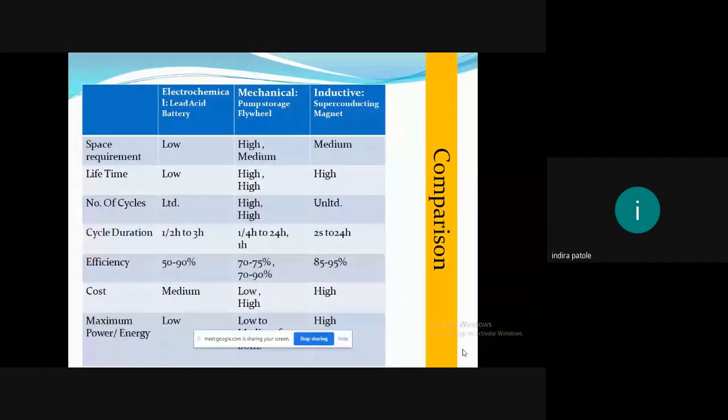And this is the comparison between the electrochemical, that is lead acid battery, mechanical pump storage, flywheel storage, inductive superconducting magnetic storage energy. So energy storage systems. Now the space requirement by electrochemical storage, lead acid batteries, is low. The lifetime for electrochemical lead acid batteries is less. The number of cycles it follows is limited. The cycle duration can be one or two hours to three hours. Efficiency is 50 to 90%. Cost is medium. Maximum power or energy produced by this kind of storage is low.